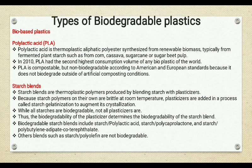The next type is starch blends, which are also biodegradable plastics. Starch blends are thermoplastic polymers obtained by blending starch with plasticizers. Blending is the process of mixing thoroughly. Plasticizers are additives added to increase the plasticity of starch, since starch polymers are brittle in nature at room temperature. To change the plasticity of brittle starch, plasticizers are added. However, not all plasticizers are biodegradable.